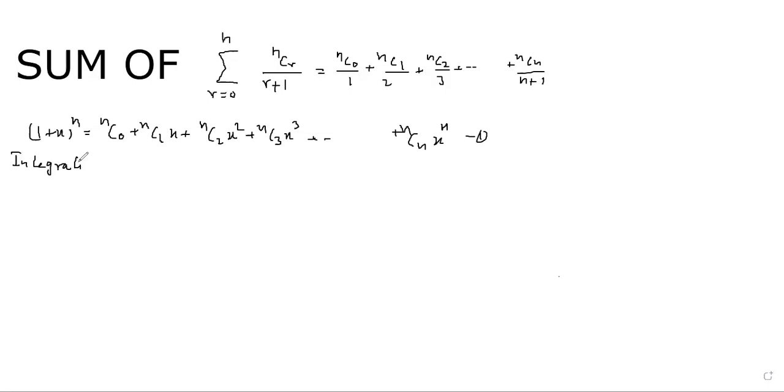Let's integrate both sides. If we integrate this, 1 plus x to the power n dx. This is integration from nC0 plus nC1x plus nC2x square plus nC3x cube, likewise nCnx to the power n dx. And we take limit from 0 to 1. So what do we see?